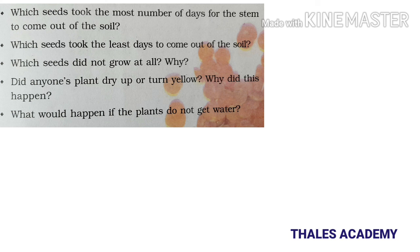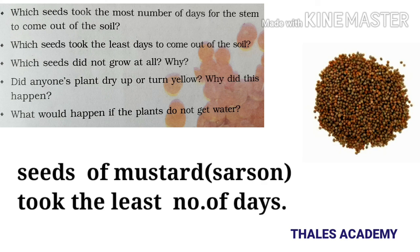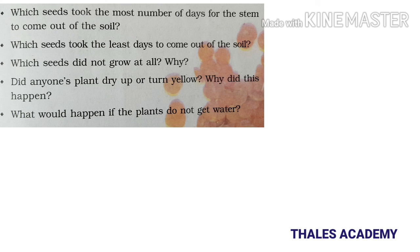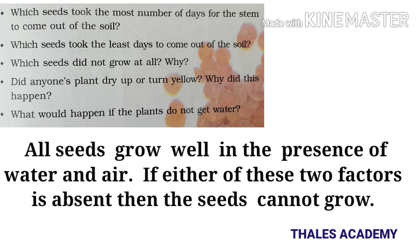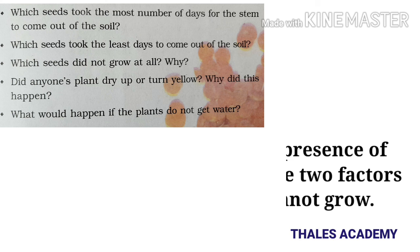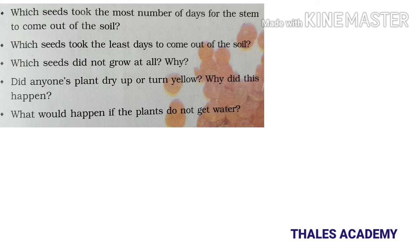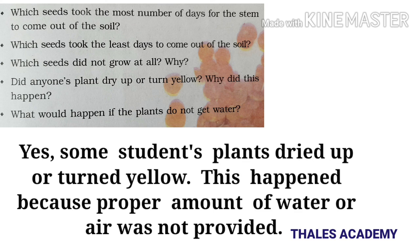Which seeds took the least days to come out of the soil? Which seeds did not grow at all and why? All seeds grow well in the presence of water and air. If either of these two factors is absent, the seed cannot grow. Lal masoor dal will not sprout because it has only one cotyledon.